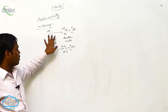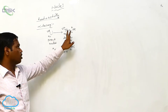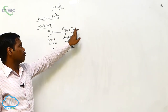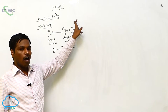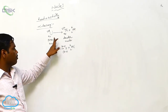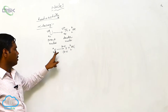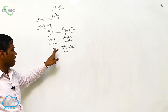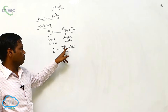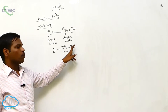In this alpha decay, uranium-92-238 decays into thorium-92-234 plus helium-2-4. This helium-2-4 is the alpha particle. This X-Z-A gives Y, Z minus 2, A minus 4, plus helium-2-4.